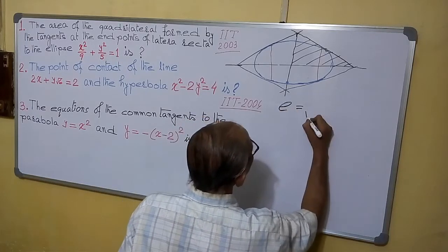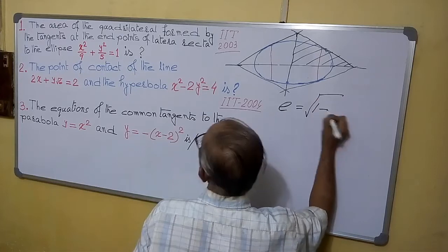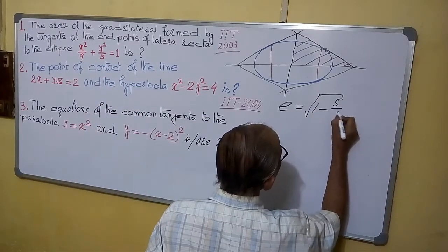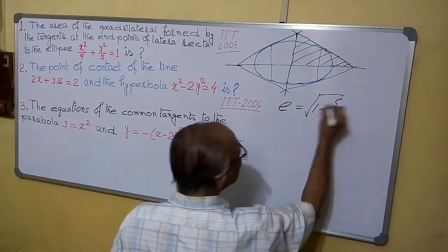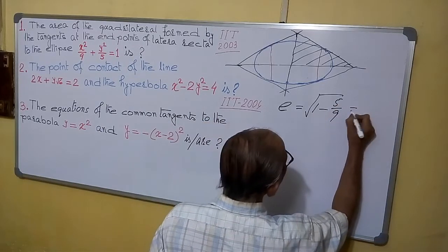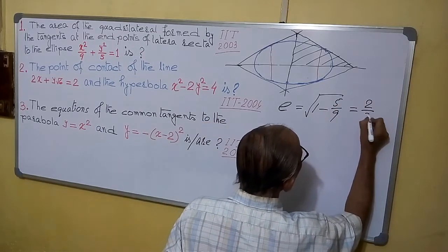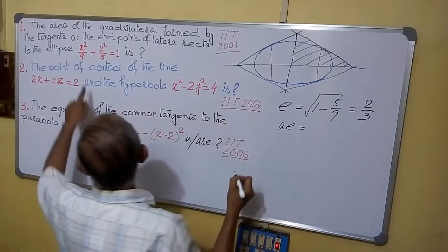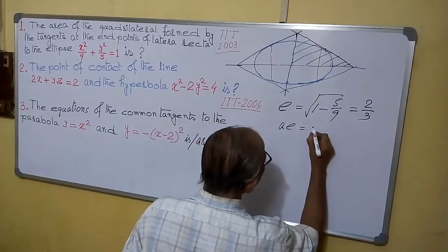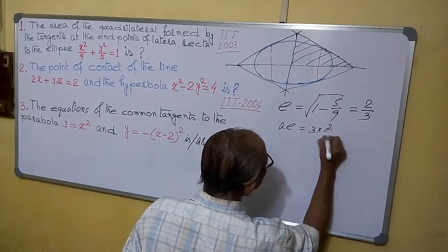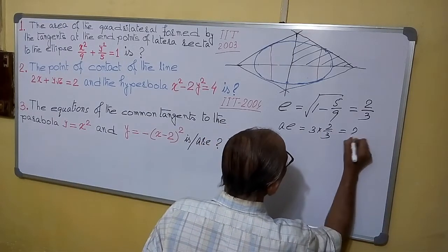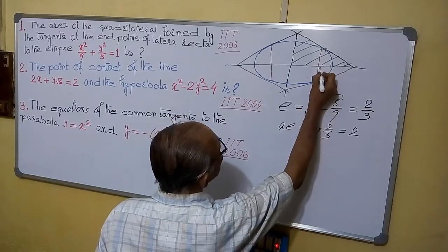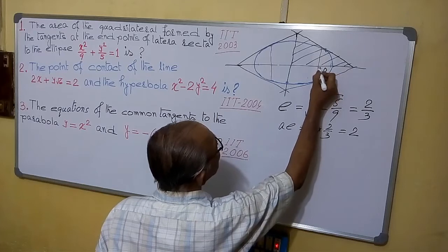E equals to root of 1 minus b²/a², that is 5/9, giving 9 minus 5 = 4/9, so E = 2/3. Then ae = 3 × 2/3 = 2. So the focus is at the point (2, 0).